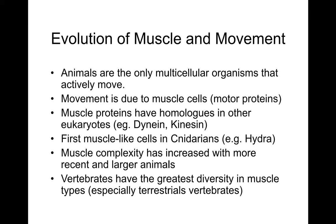Movement is one of those unique features of animals. Metazoans are the only multicellular organisms that actively move, because they have muscle cells or motor proteins. They do have homologues in other eukaryotes — for example dynein and kinesin. But the first really muscle-like cells appeared in cnidarians, for example the hydra. As evolution has proceeded, animals have gotten more and more complex, their musculature has gotten more complex, and they're able to do many more different types of movements characterized by different rates and force output.